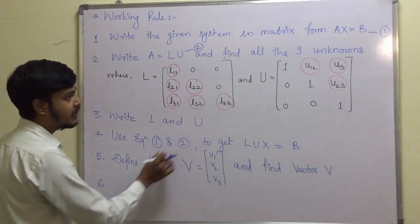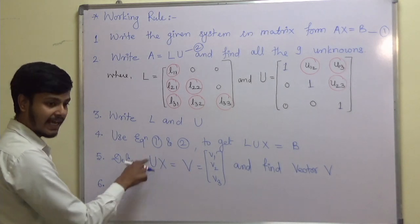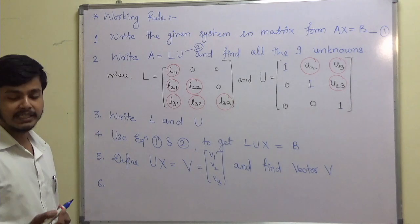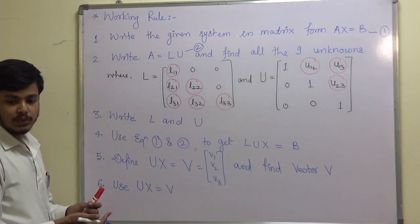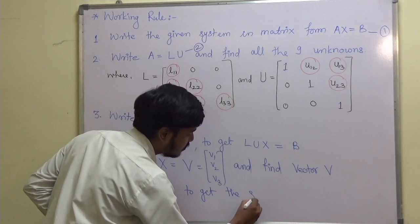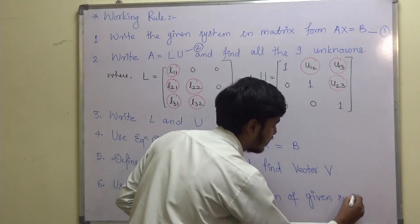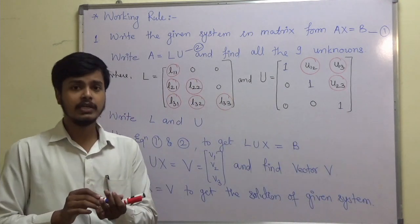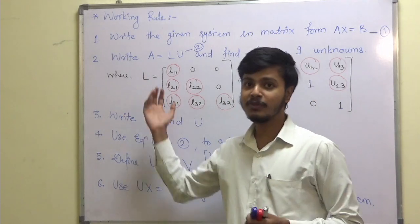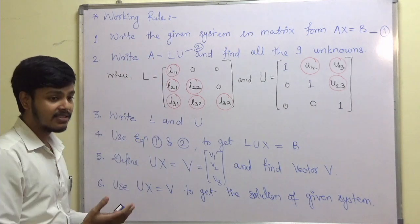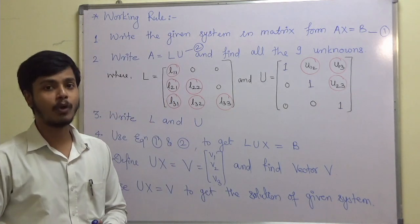At last, use U x equal to V to get the solution. U will be known from step 3, V will be known from step 5, so when you substitute, the only unknown is x — that is x₁, x₂, x₃, the matrix of unknowns — giving you the required solution of the given system of equations. These steps are very essential in order to solve problems on Krauss method, and you will realize this working rule is very handy as far as problem solving is concerned.